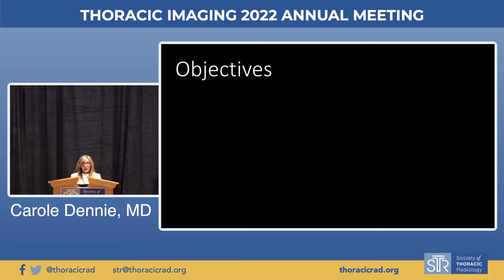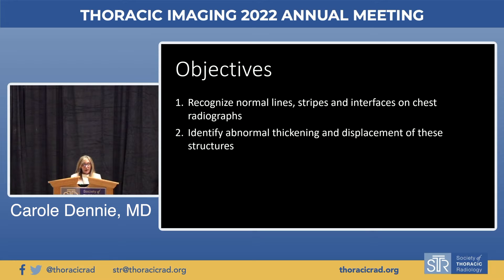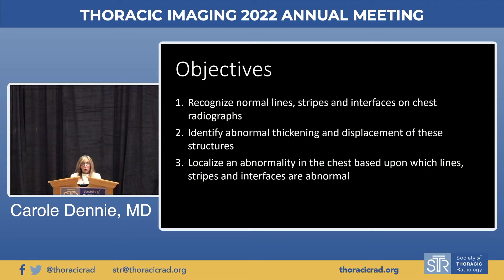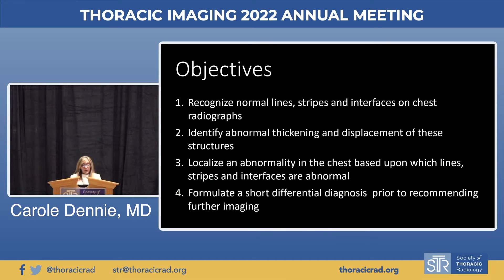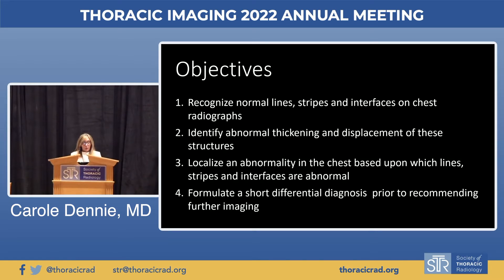At the end of this presentation, participants should recognize normal lines, stripes, and interfaces on chest radiographs; identify abnormal thickening and displacement of these structures; localize an abnormality in the chest based upon which lines, stripes, and interfaces are abnormal; and formulate a short differential diagnosis prior to recommending further imaging.